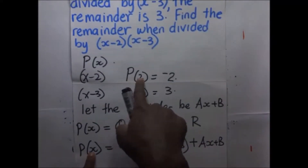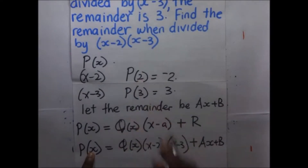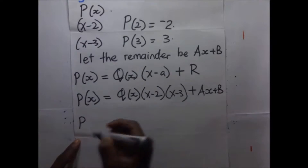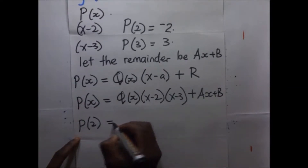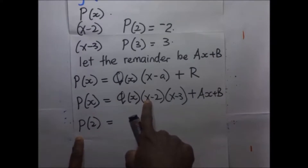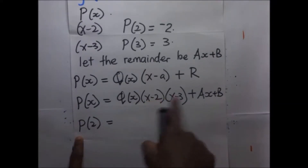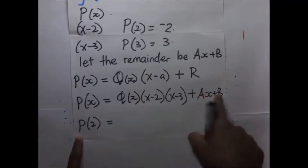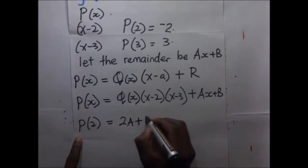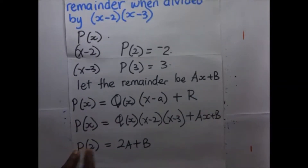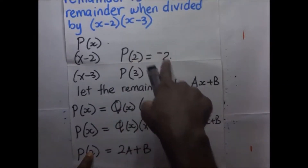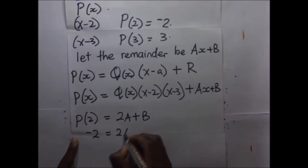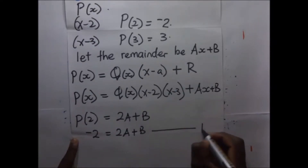When P of 2: we substitute 2, and 2 minus 2 is 0, so that whole term dies. We remain with 2A plus B. We know that when the value of X is 2 we get a remainder of negative 2, so this gives us 2A plus B equals negative 2. That's our first equation.